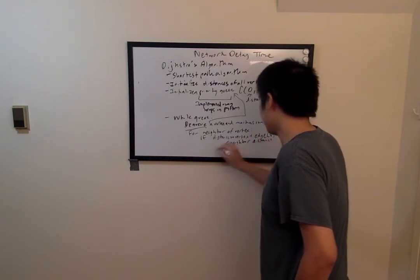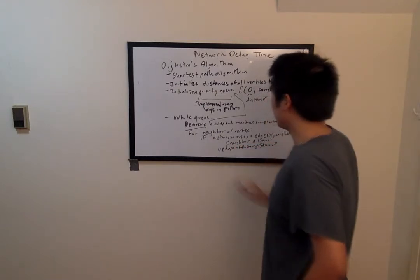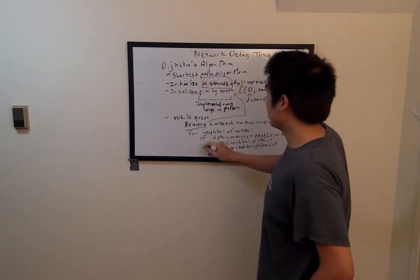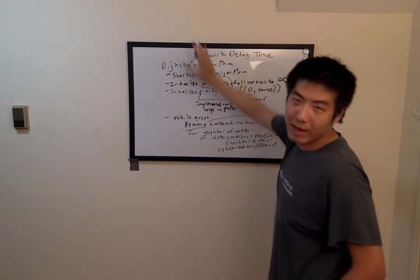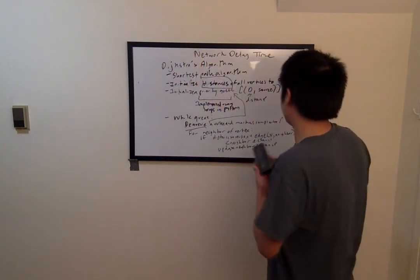And once this is completed, the distances data structure will have the shortest paths to all vertices. Or if there is no path to that vertex, it will remain as positive infinity.